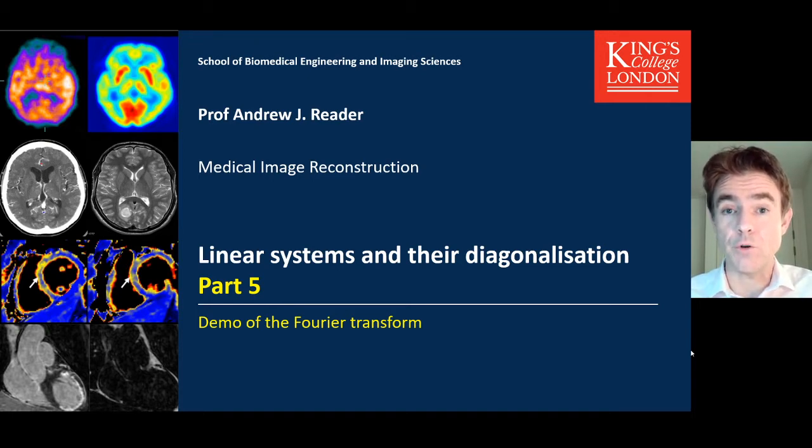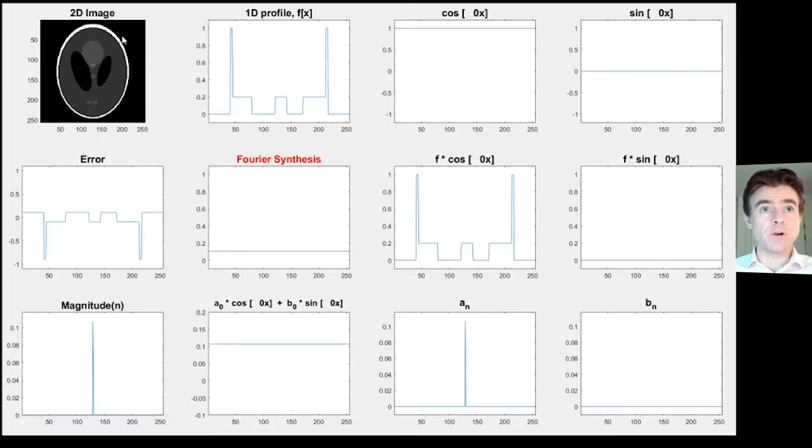In the top left corner I have a two-dimensional image known as the Shep Logan Phantom, used in medical image reconstruction simulation. I've taken a horizontal line profile through the center of that image, and that is what I'm plotting here. I'm calling this a one-dimensional profile, f of x, where x is the spatial coordinate.